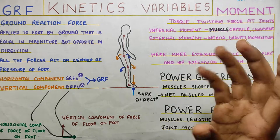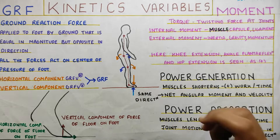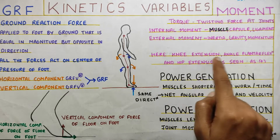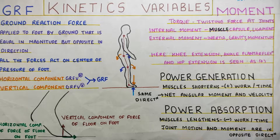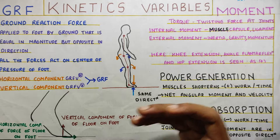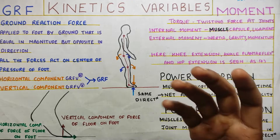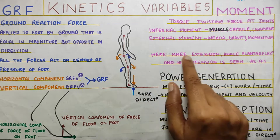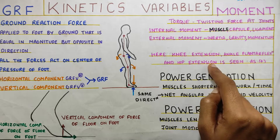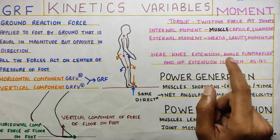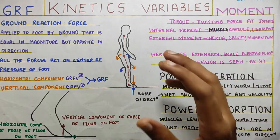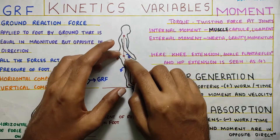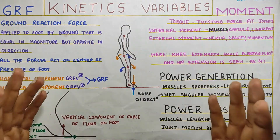These moments can be divided into positive and negative — this is called the movement convention. For example, knee extension, ankle plantar flexion, and hip extension are seen as a positive moment, or in some cases they can be seen as a negative moment. The opposite — knee flexion and hip flexion — would then be seen as a positive moment. These movements work against gravity and create the twisting force at each joint to keep your body upright.